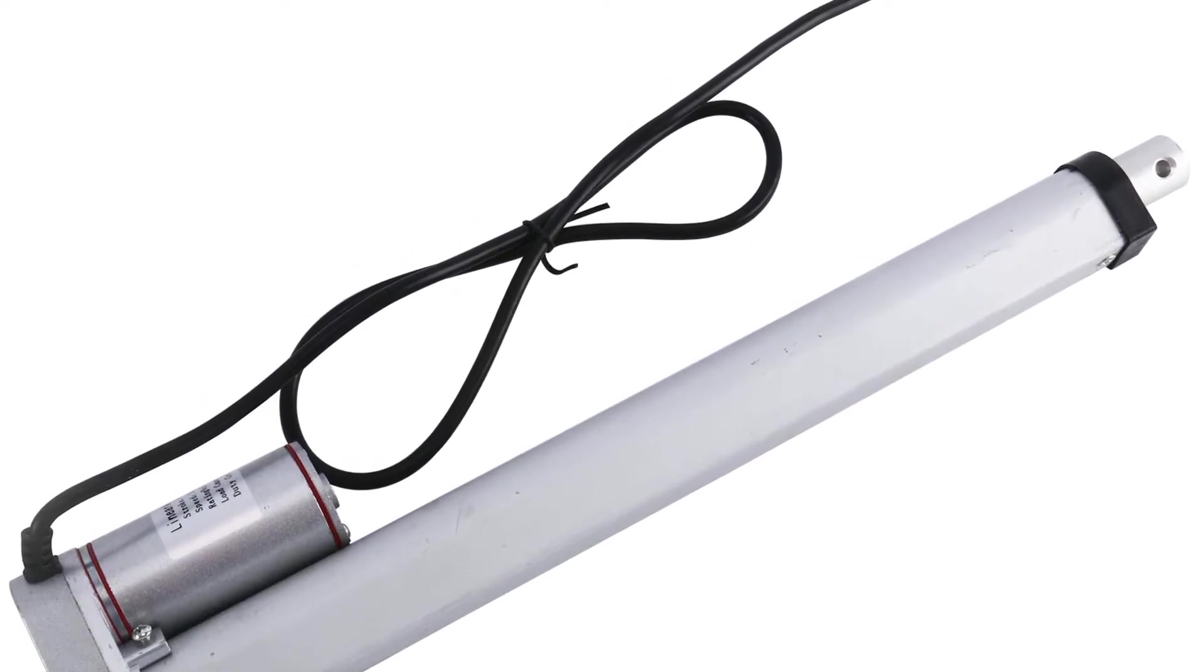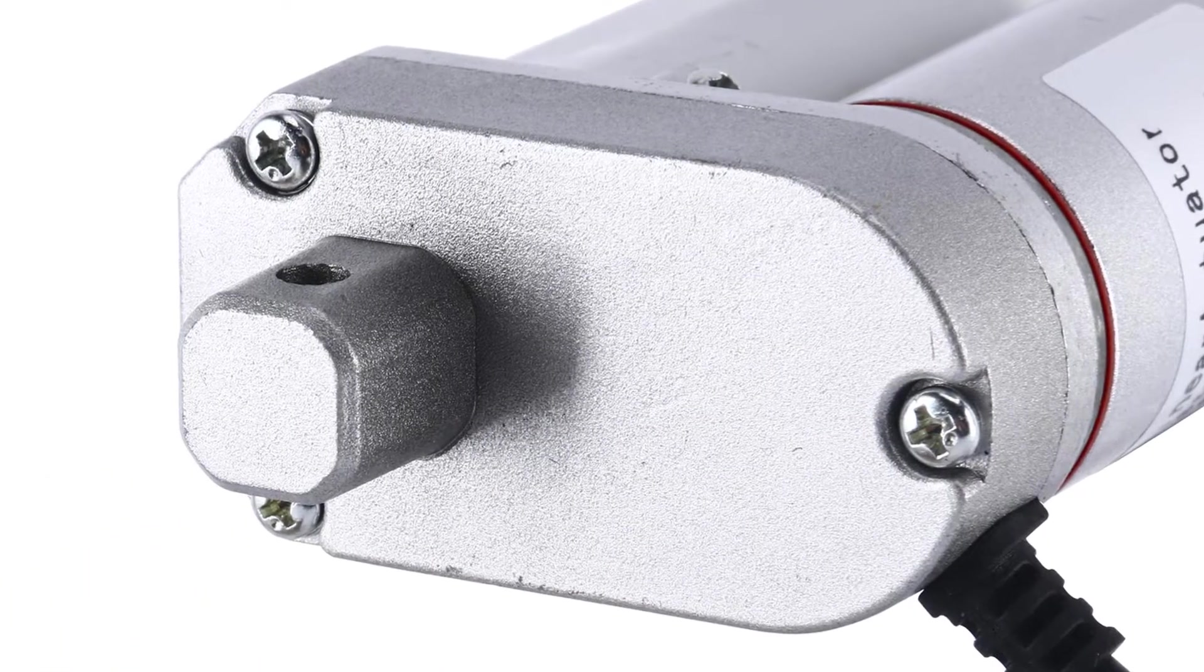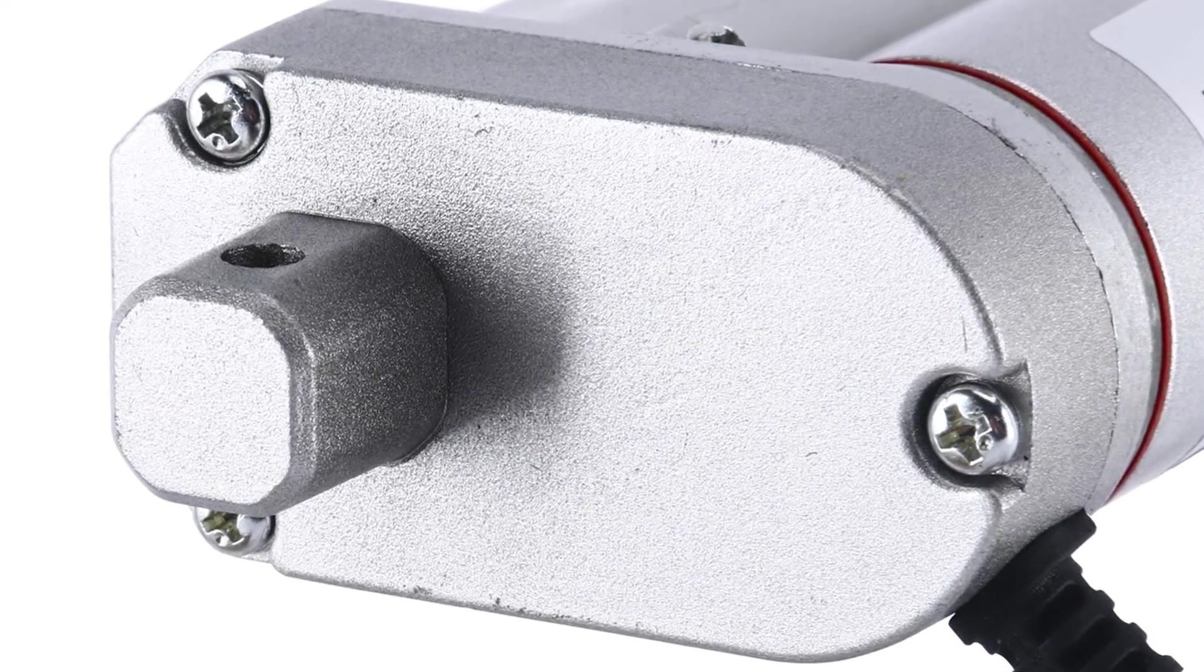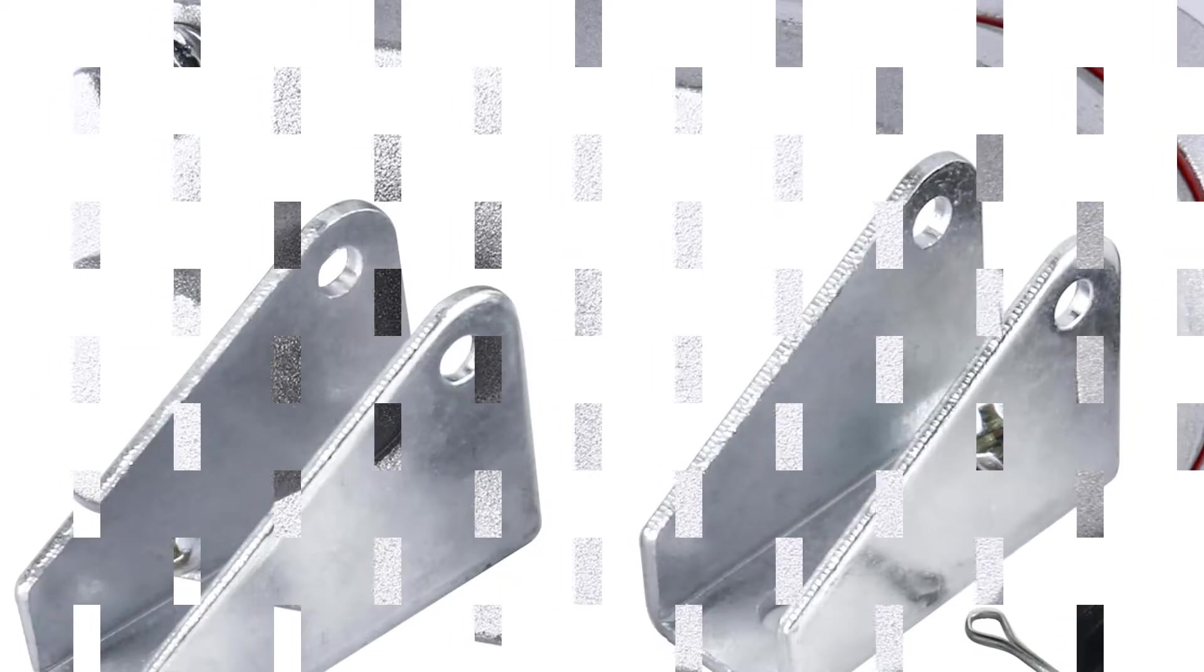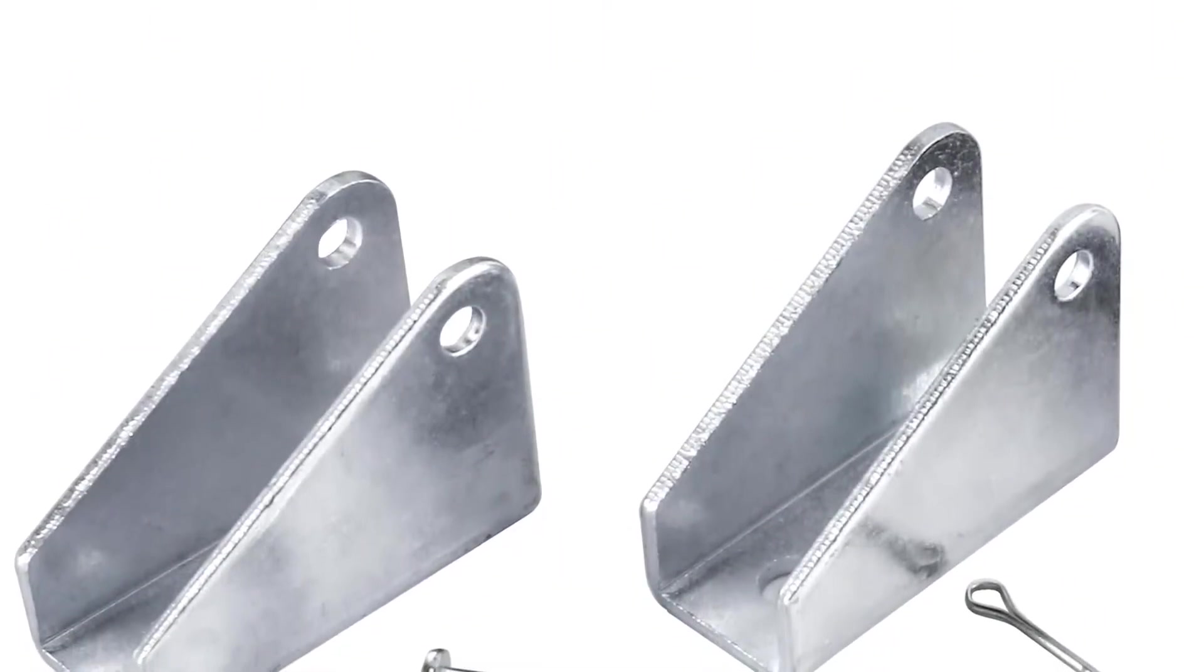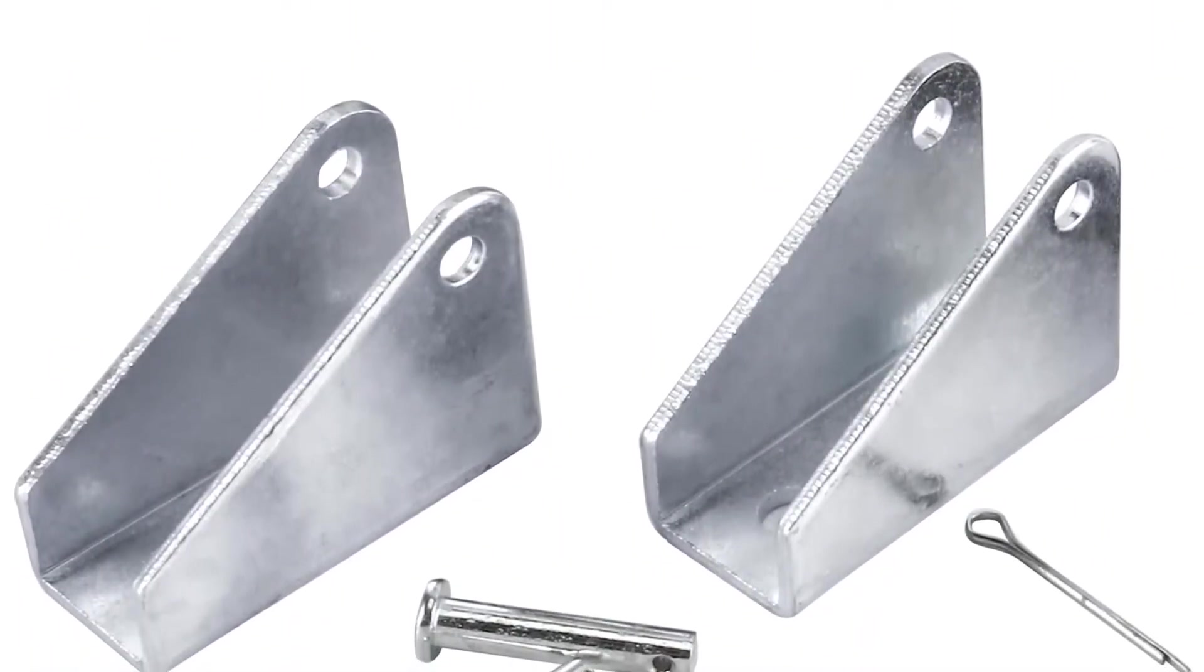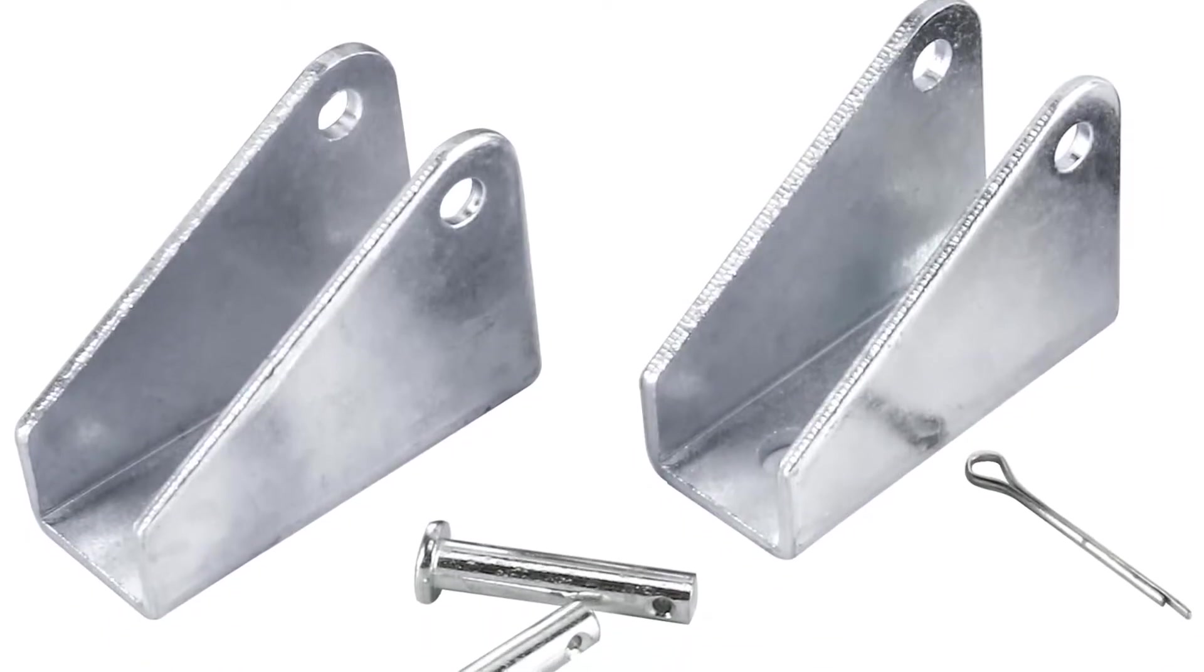Despite having a low price tag, you still get a maximum load capacity of 225 pounds with it. This is combined along with a 300-millimeter stroke length which should be good enough for those who are on a budget. To ensure that this linear actuator can be used quickly, it uses a travel speed of 10 millimeters per second.